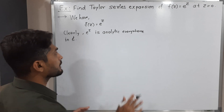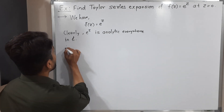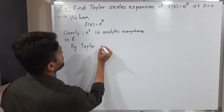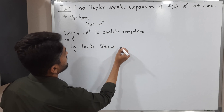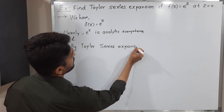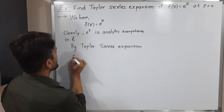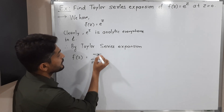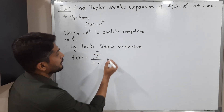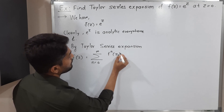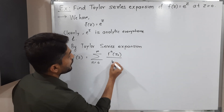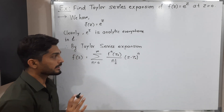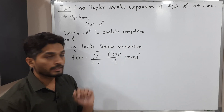So e^z is analytic everywhere in the complex plane. Therefore, by Taylor series expansion, we can write f(z) as a summation where n varies from 0 to infinity of the nth derivative of f at the particular point z₀, divided by n factorial, times (z − z₀)^n. This is the Taylor series expansion at z = z₀.